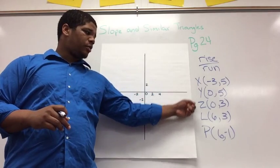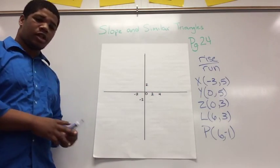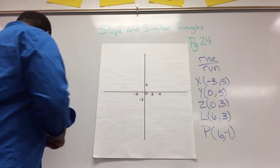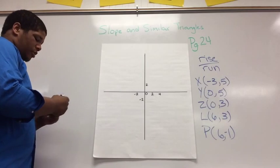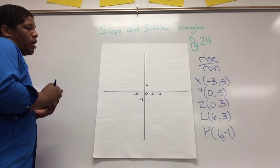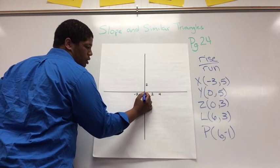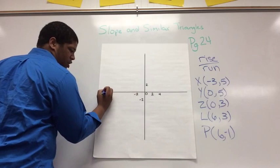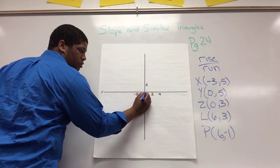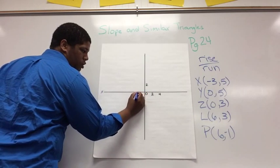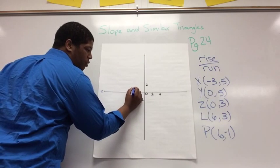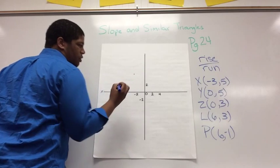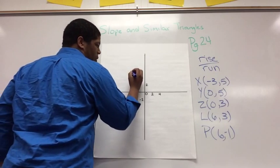I need to plot these points on my graph and find the slope. So on my graph, I'm going to start with the first point, negative 3, 5. So I'm going to go to the left 3 on my x-axis, which is this axis here. I'm going to go left 3, 1, 2, 3, and then up 5. 1, 2, 3, 4, 5. I'm going to label that X.